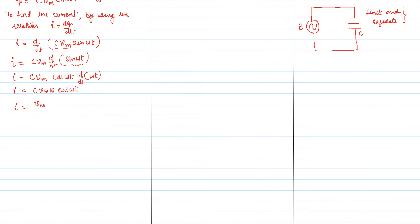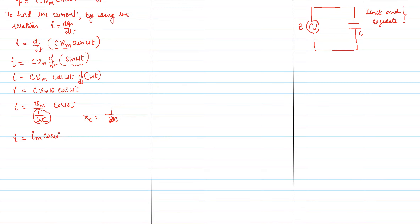This can be rewritten using 1/(ωC), so I = Vm / (1/ωC) · cos(ωt). This 1/ωC is called Xc, the capacitive reactance, so Xc = 1/(ωC). Then I = Im cos(ωt), where Im is the maximum current equal to Vm / Xc.